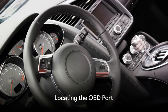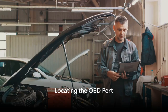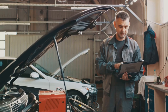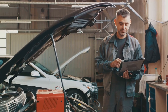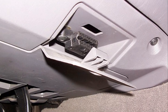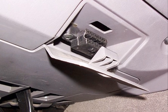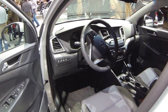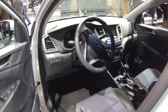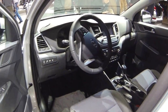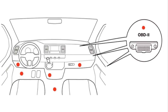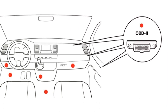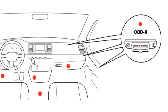So where do you find the OBD port in your car? While the exact location can vary depending on your car's make and model, there are a few common spots to check. Under the dashboard on the driver's side is the most typical location — it could be near the steering column, close to the center console, or under the lower dash panel. Some cars may have it near the fuse box, which could be under the dashboard, by the driver's side door, or in the glove box.